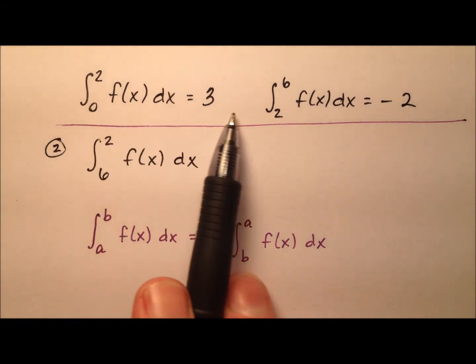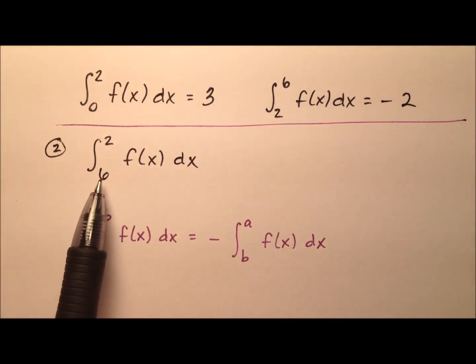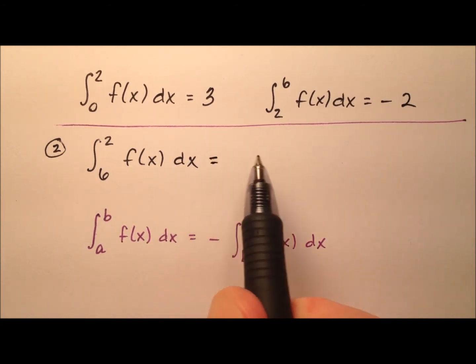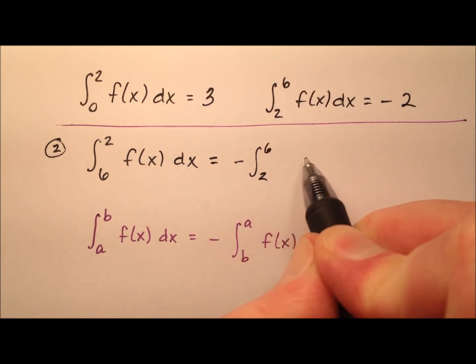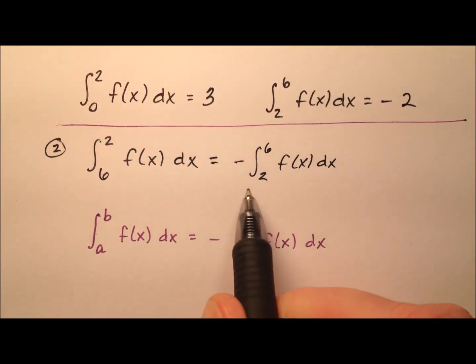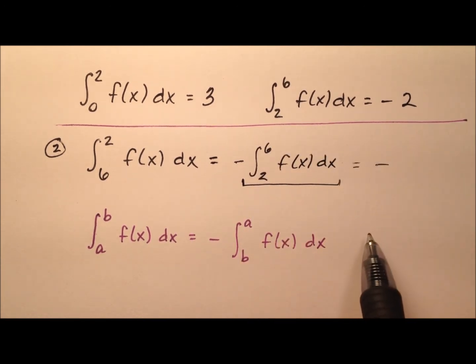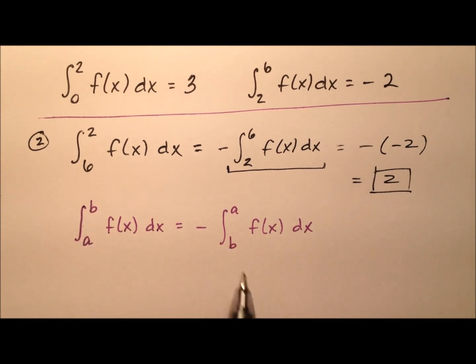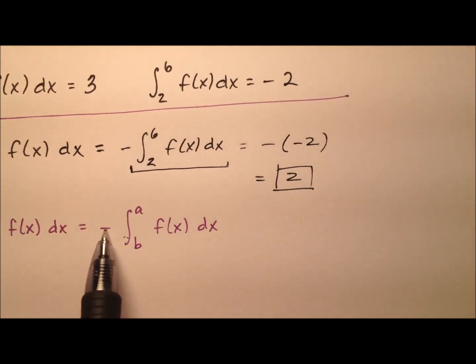In our second example, we're looking for the integral from 6 to 2 of our function. We're given the integral from 2 to 6, but now our limits of integration have been switched. We have a property which says the integral from a to b equals the negative of the integral from b to a. So the integral from 6 to 2 equals the opposite of the integral from 2 to 6. Since the integral from 2 to 6 is negative 2, this will be the opposite of negative 2, which equals positive 2.